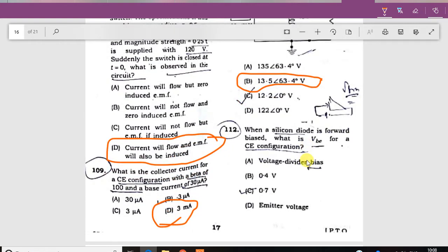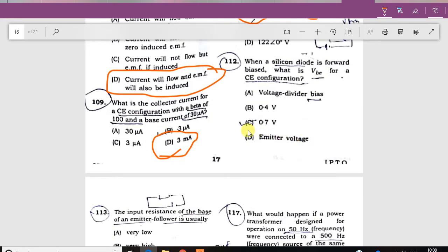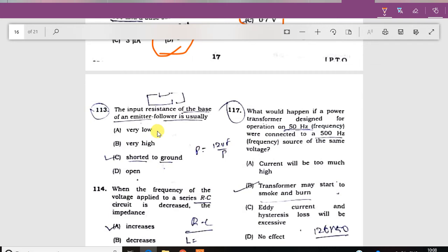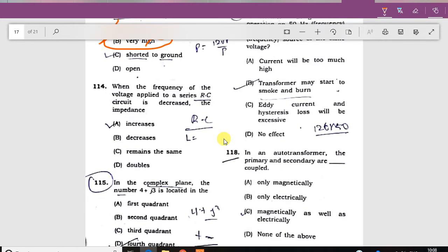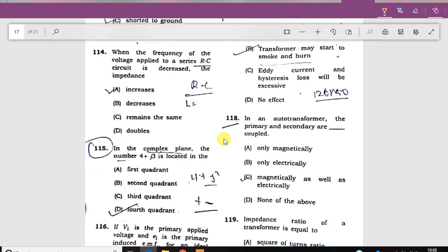When a silicon diode is forward biased, what is the voltage for the configuration? The performance is 0.7 volt. The input resistance at the base emitter is usually very high. When frequency of voltage applied in RC circuit increases, the impedance decreases. The answer is A.